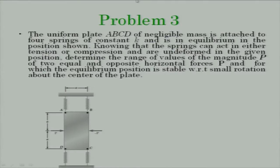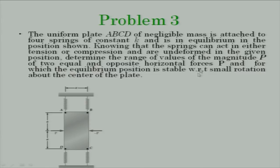The last question for today: we have a rectangular plate with given dimensions. At all four corners A, B, C, D we place four vertical springs each of stiffness K. We apply two forces P and minus P along the centerline of the plate. For given values of K and A, we want to find the range of P for which the assembly is in stable equilibrium, specifically with respect to small rotation about the center of the plate.